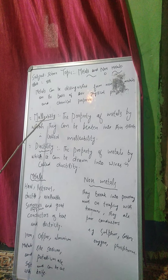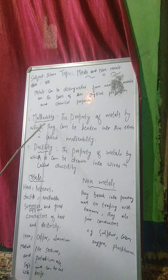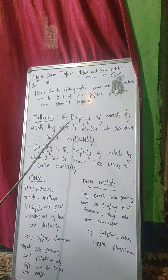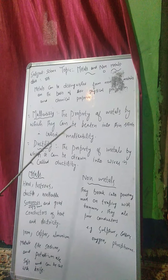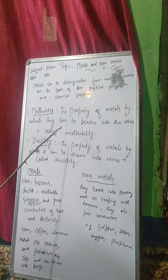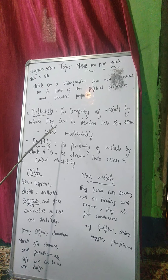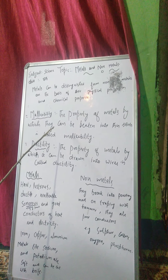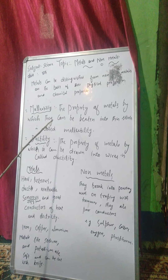Is mein pehle ek word aata hai — malleability. Malleability kya hota hai? Malleability is the property of metals by which they can be beaten into thin sheets. Yeh metals ki ek property hai jisse hum metals ko thin sheets mein convert kar sakte hai.